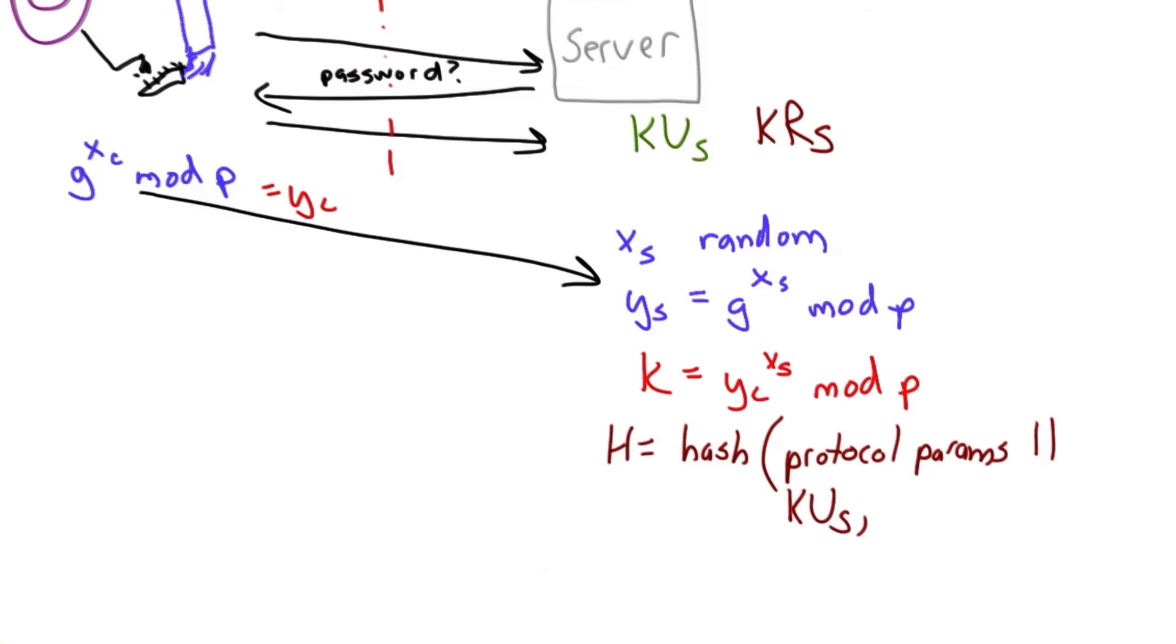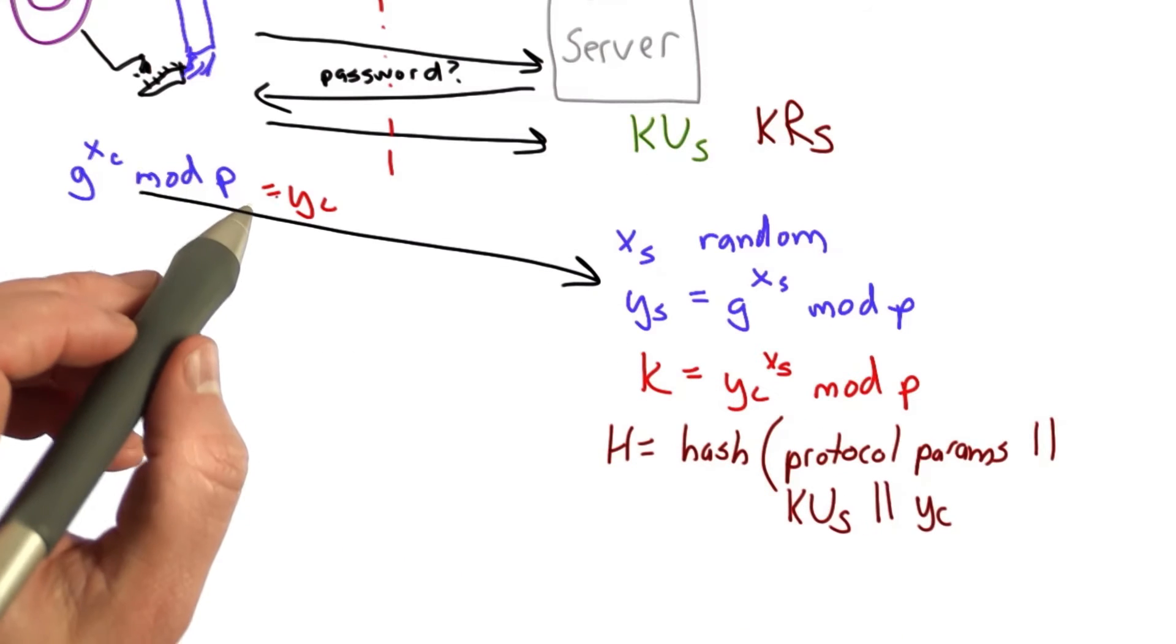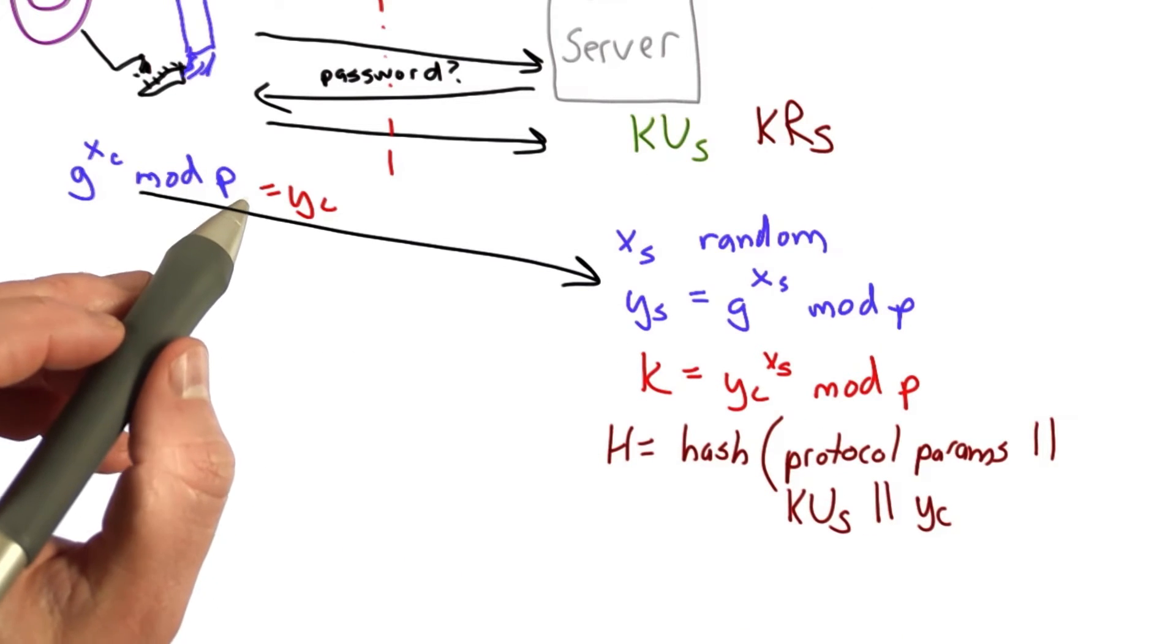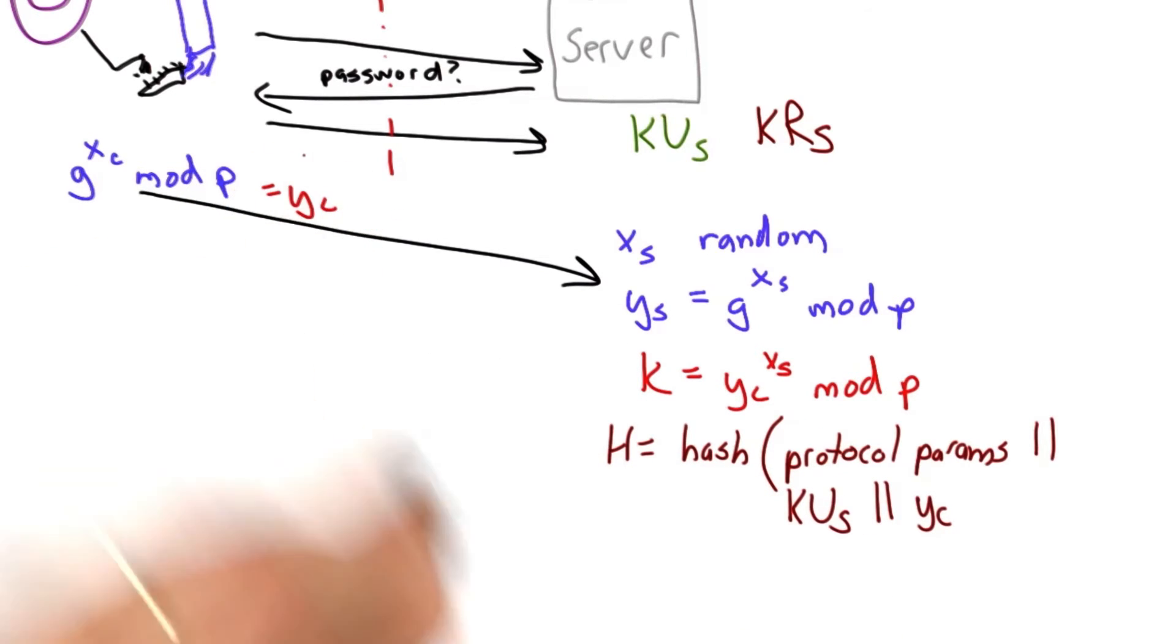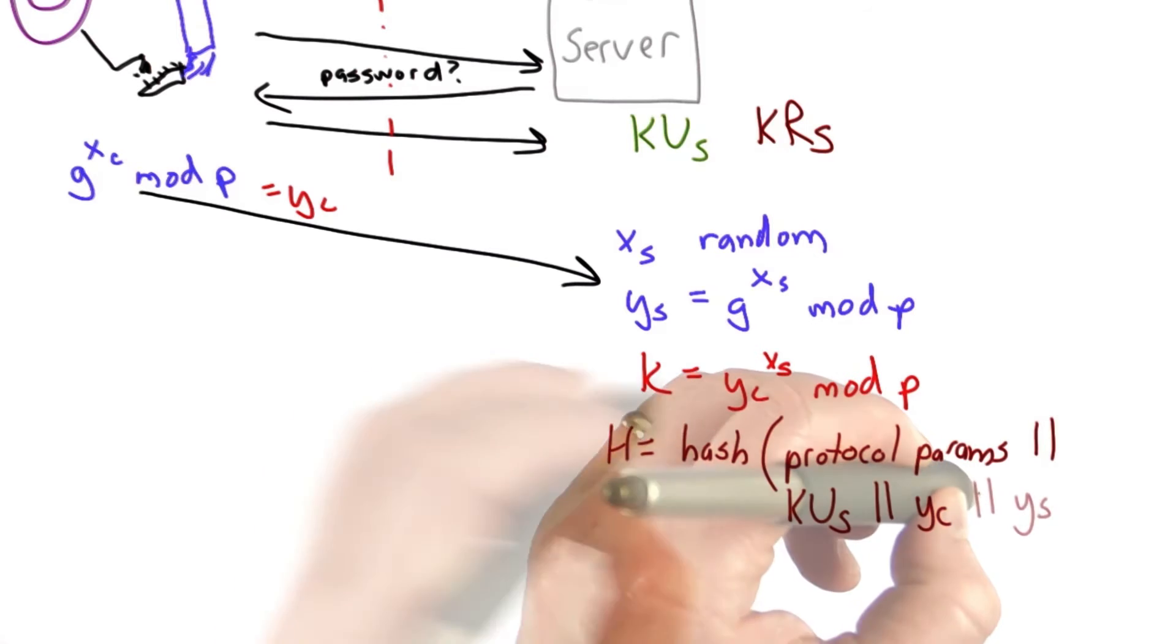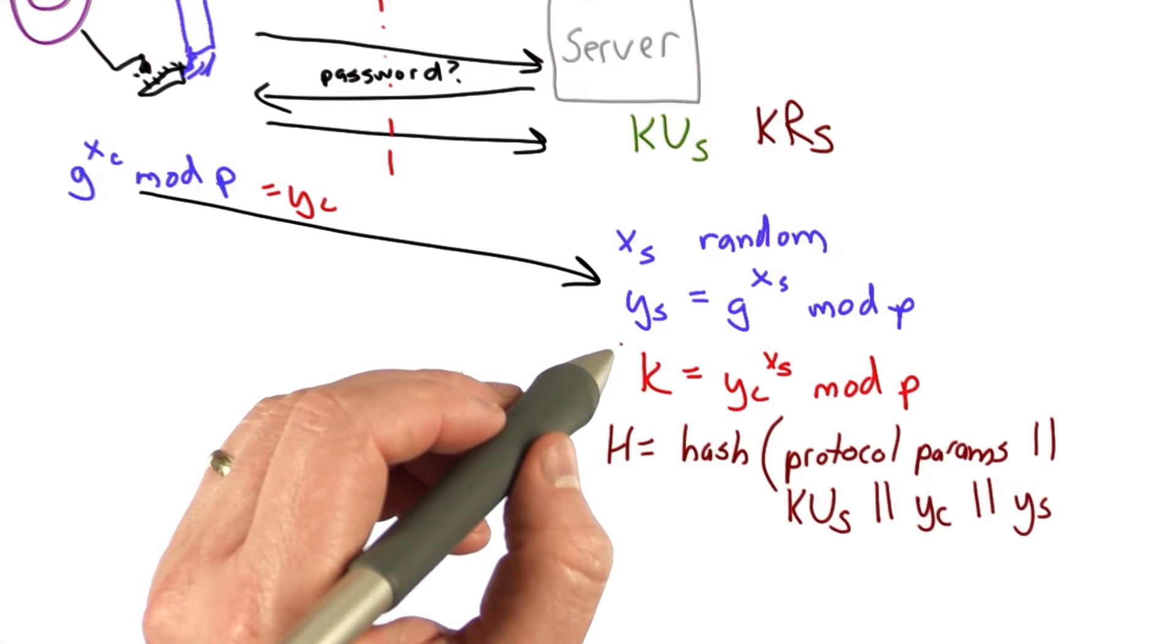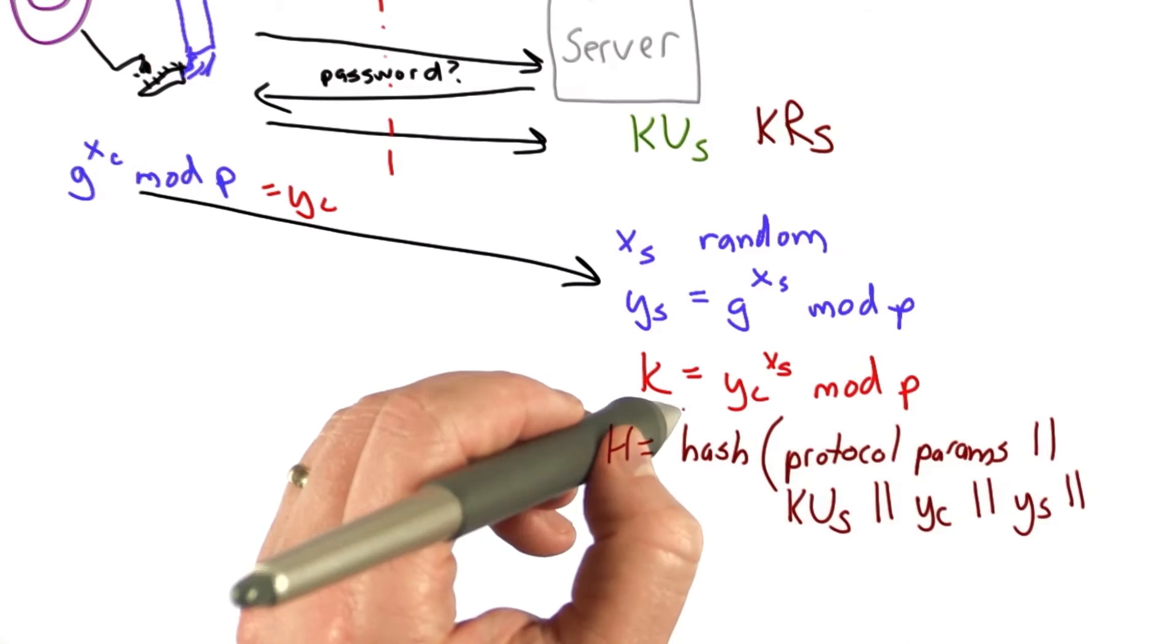The value of yc that was sent by the client. That verifies that it's part of the same session, prevents replay attacks, because now that value was determined by the client. The value of ys, this is the normal Diffie-Hellman response, and the key.